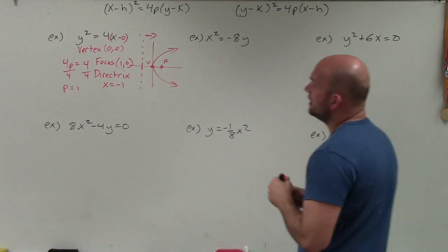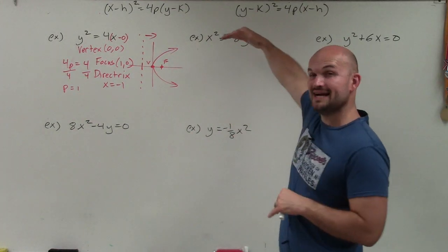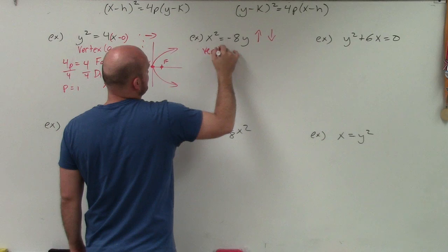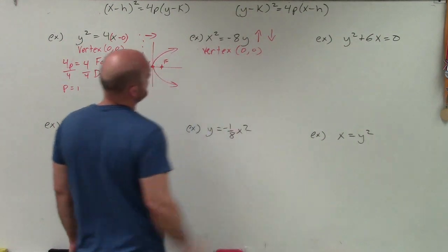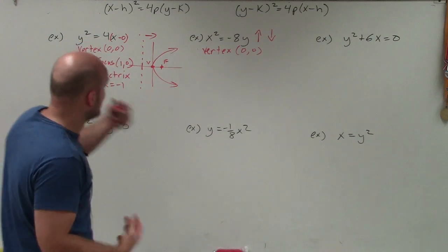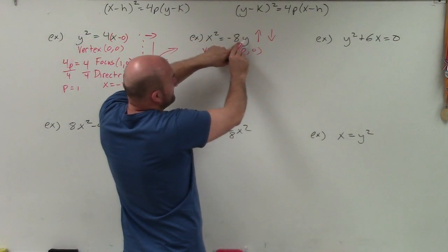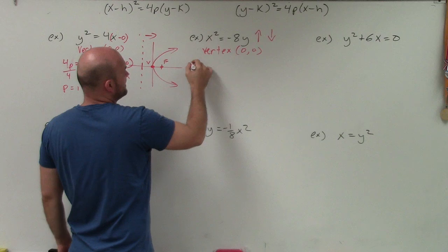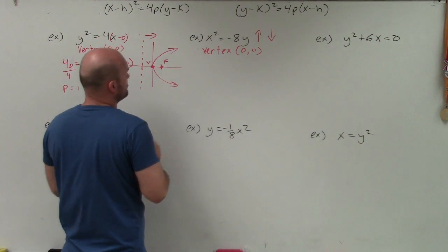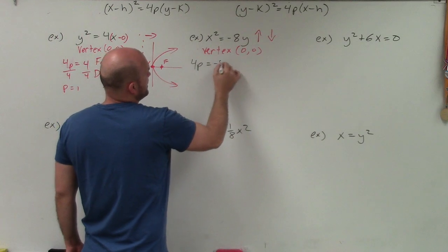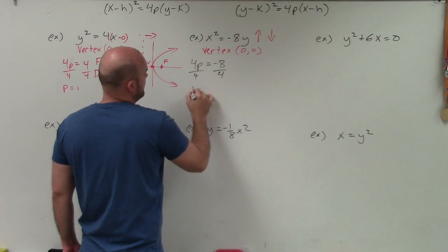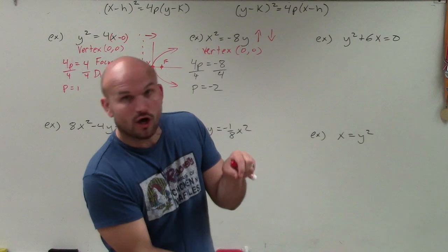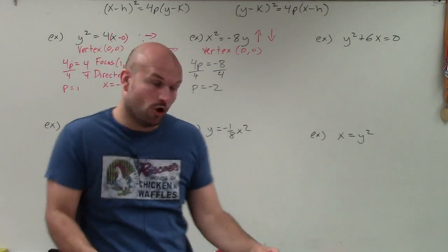Next example: vertex at (0, 0) and x is squared, so the graph is going to either open up or down. Vertex is at (0, 0). Now we find 4p — remember, 4p is what's being multiplied by your linear variable. In this case, the linear variable is y. So 4p = −8, divide by 4, and p = −2. Since p is negative, my focus is going below my vertex, so the parabola opens down.